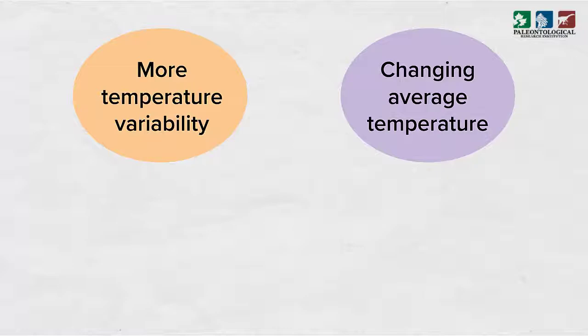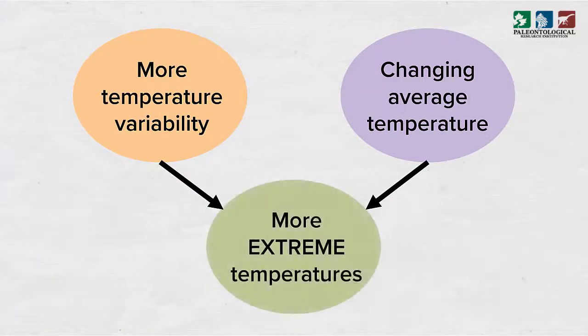It might not be obvious, but changes in temperature variability and changes in average temperature can both lead to more extreme temperatures. Here's one way we might look at this mathematically.